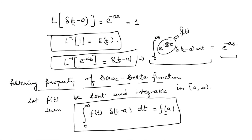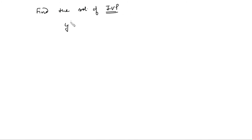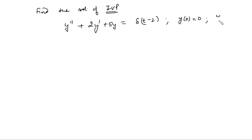Now let's see with the help of an example how to find the solution of an initial value problem where the Dirac delta function is involved on the right-hand side, under the conditions y(0) equals 0 and y'(0) equals 0. We have to find the solution using the Laplace transform. Note that in ordinary differential equations there is no method to solve a differential equation involving a function that is not even piecewise continuous, but using the Laplace transform we can.